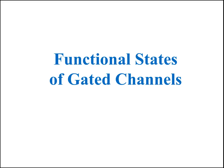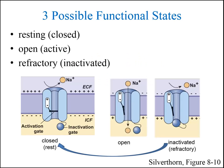The next topic is the functional states of gated channels. Recall that there are three possible functional states. All gated channels have a closed or resting state, when the channel is closed and activatable — meaning it can respond to its gating stimulus. They also have an open or active state, in which the channel has opened in response to its gating stimulus and ions can flow through. Some channels also have a refractory or inactivated state, in which the channel is closed and inactivatable — meaning it cannot respond to its gating stimulus.